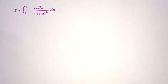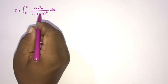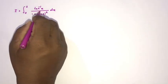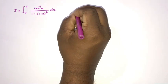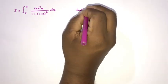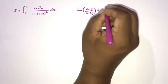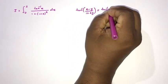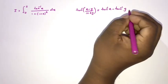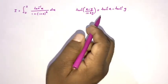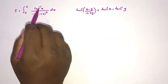Welcome to the Mathematics and My channel. In this video we are going to solve this interesting advanced model integral. To begin, the substitution method will work. We have inverse tan of x, and we know this formula: inverse tan of x minus y over 1 plus xy equals inverse tan of x minus inverse tan of y.